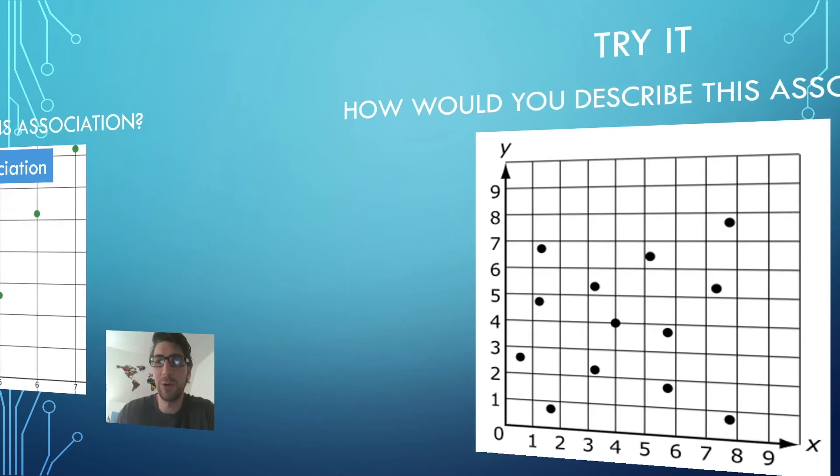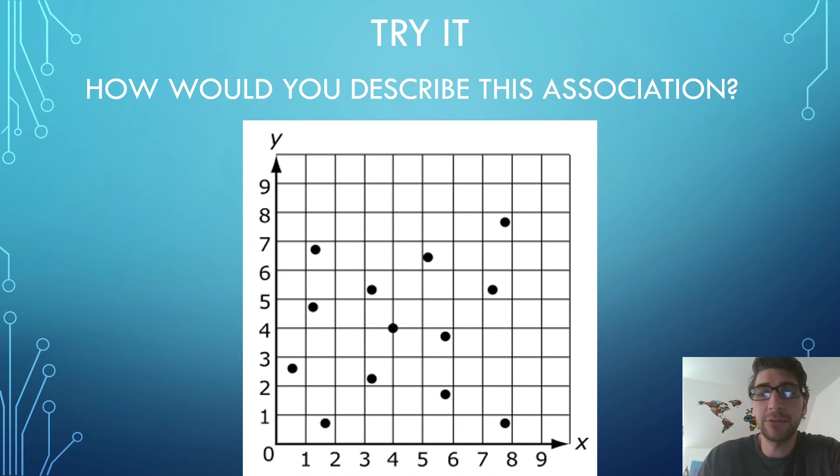Let's try one more. How would you describe this association? If you said zero association, you are absolutely correct. Now, we didn't have to decide linear or non-linear because when there is zero association, it's not going to be either.